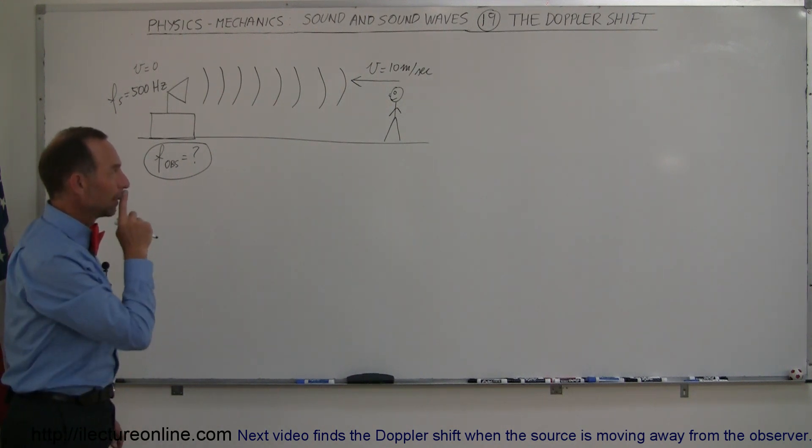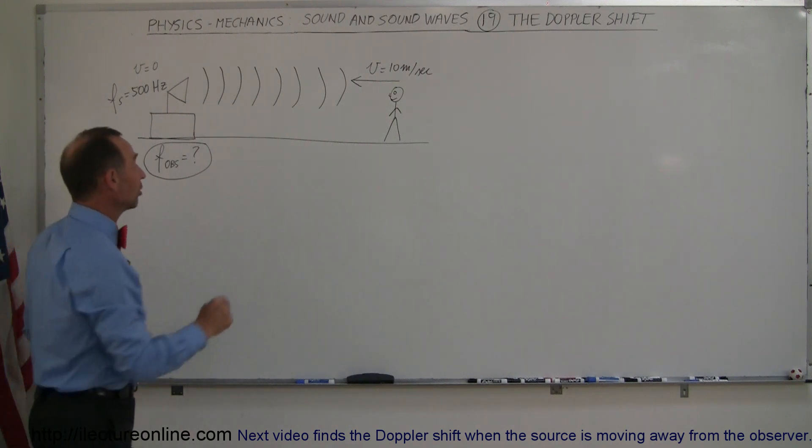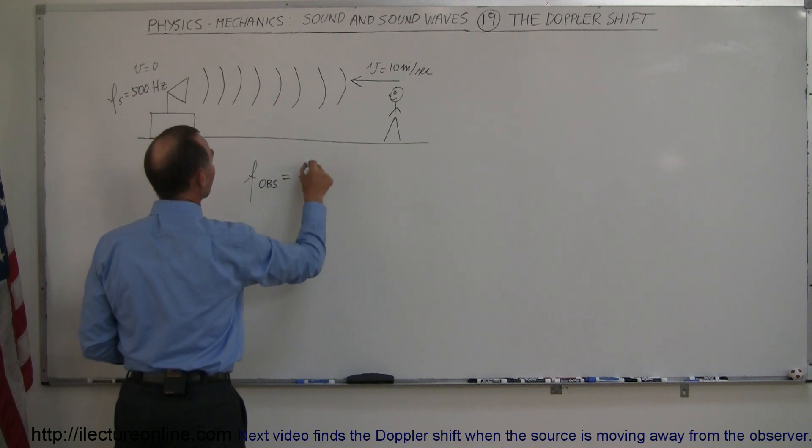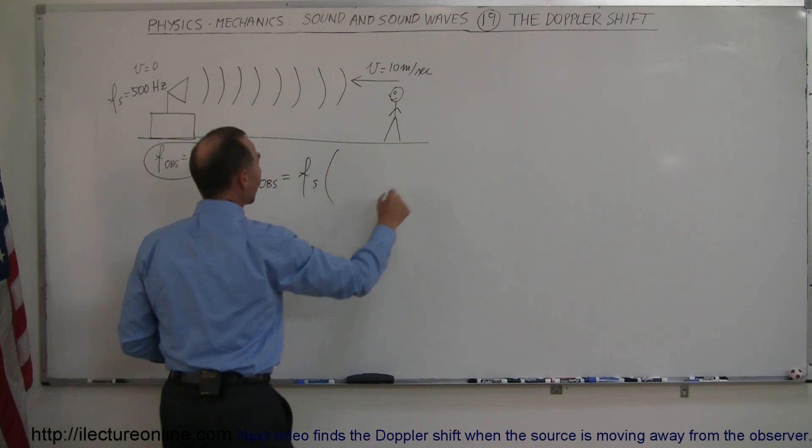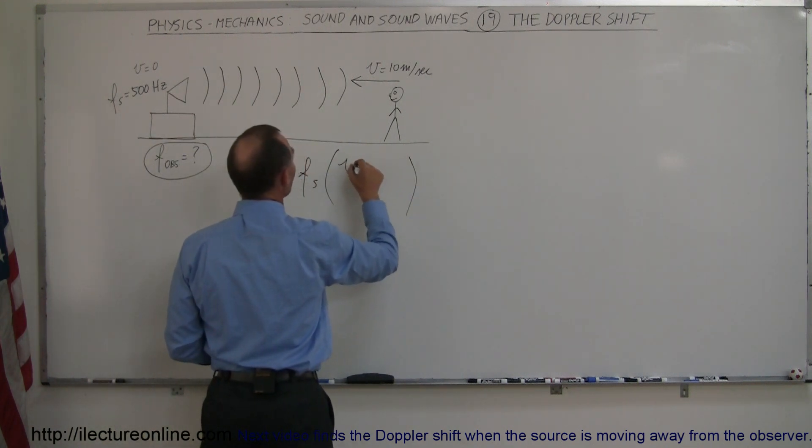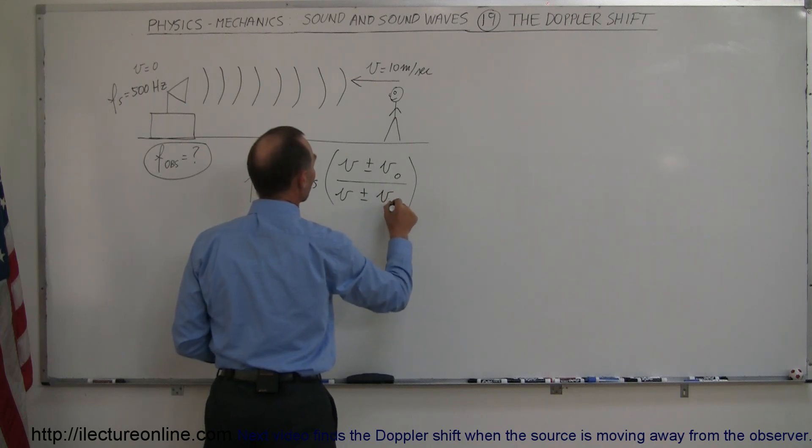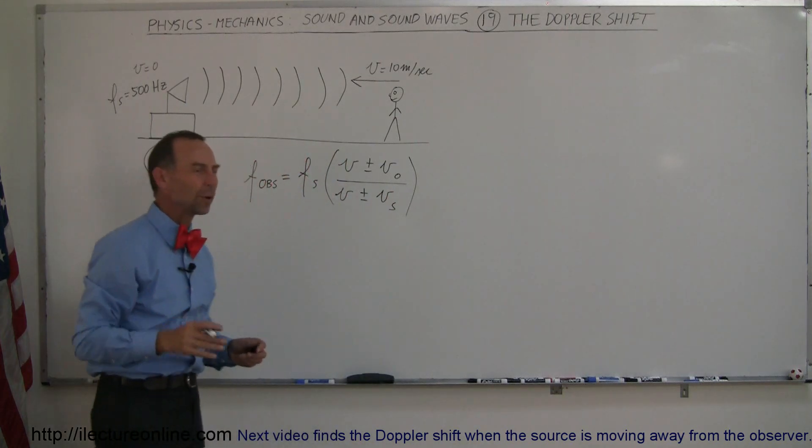First of all, we're going to use the very same equation no matter what the situation is. The equation is that the frequency observed is equal to the frequency of the source times the ratio of the velocity of sound in air plus or minus the velocity of the observer divided by the velocity of sound in air plus or minus the velocity of the source. We always use the same equation.